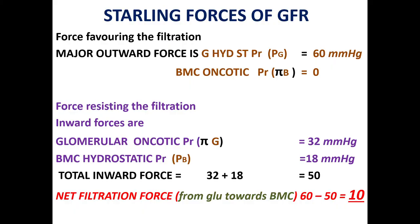These are the Starling forces. The force favoring filtration: the major outward force is the glomerular hydrostatic pressure at 60 mmHg, and the Bowman's capsule oncotic pressure is zero since there is no protein there. Forces resisting filtration: the glomerular oncotic pressure is 32, Bowman's capsule hydrostatic pressure is 18, so total inward force is 50. Net filtration pressure from glomerulus toward Bowman's capsule is 60 minus 50 equals 10.